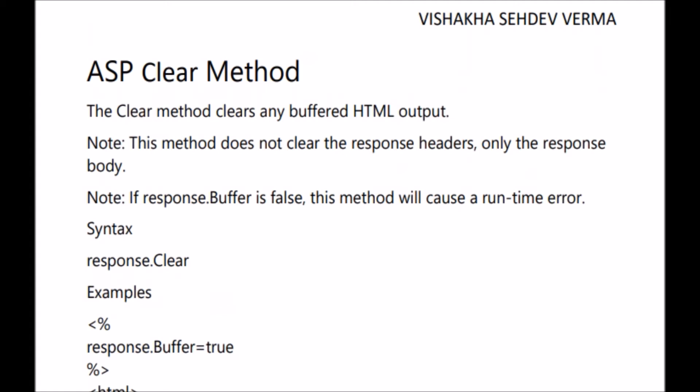The next method is the ASP clear method. The clear method is used to clear the buffered output of HTML. Note: this method will not clear the response header. If the response.buffer is false, this method will cause a runtime error, because if the property is false there is no buffered HTML output, and so there is nothing to clear. The syntax for ASP clear method is response.clear.